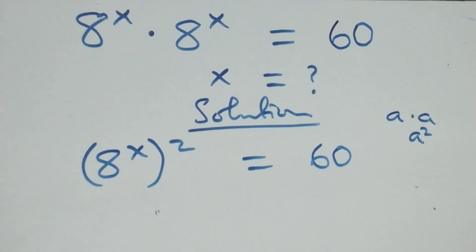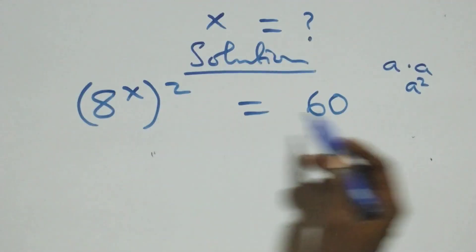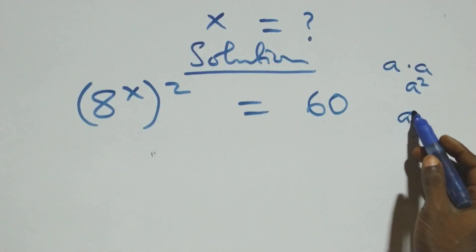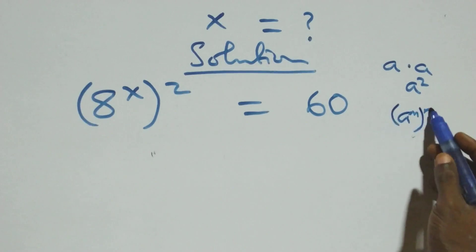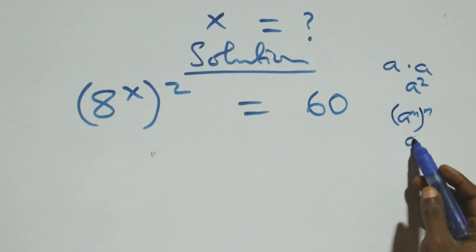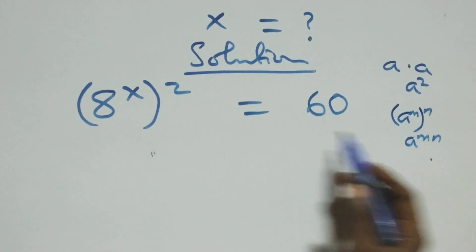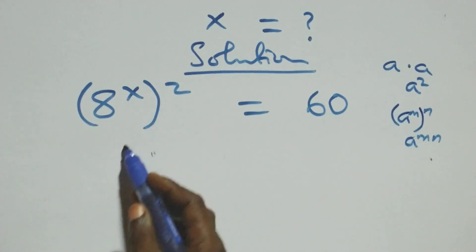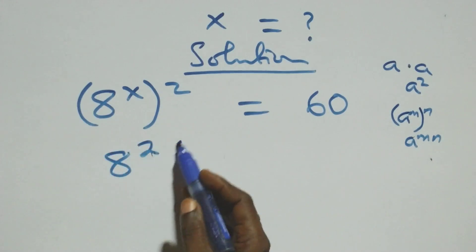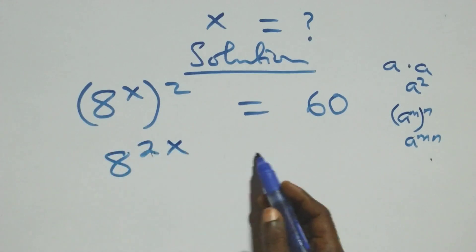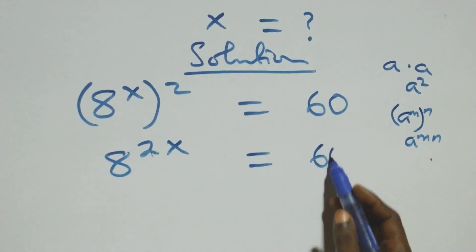Also from here, this follows when we have a raised to power m, raised to power n, which is the same thing as a raised to power mn. So the power multiplies, and we have 8 raised to power 2x equals 60.